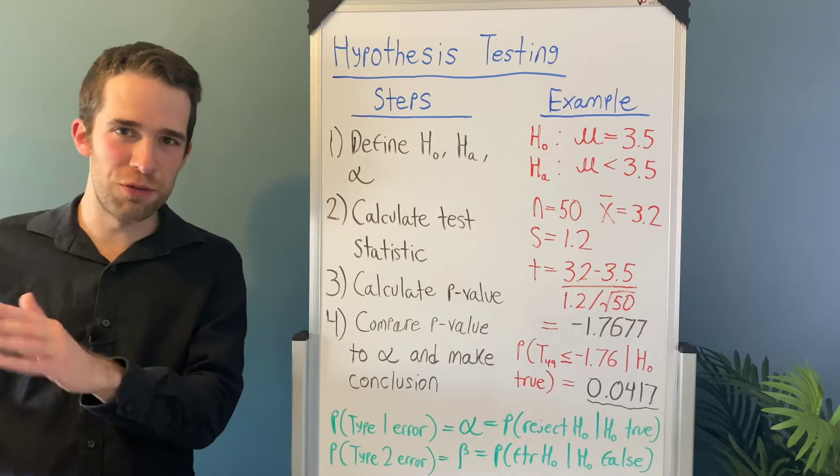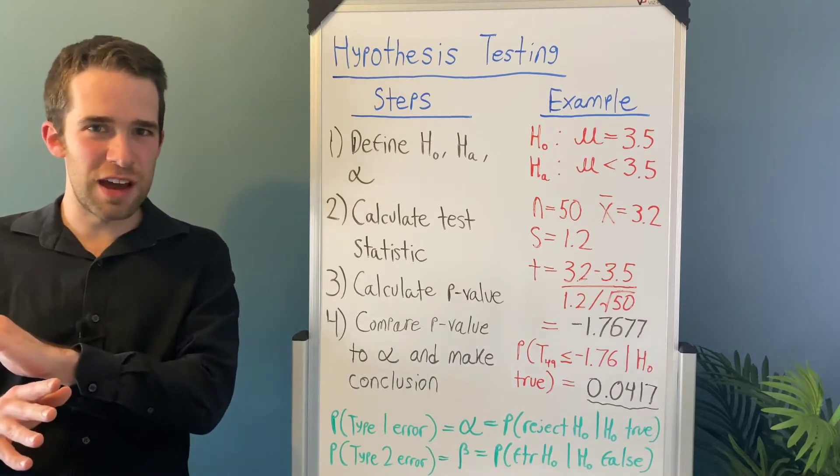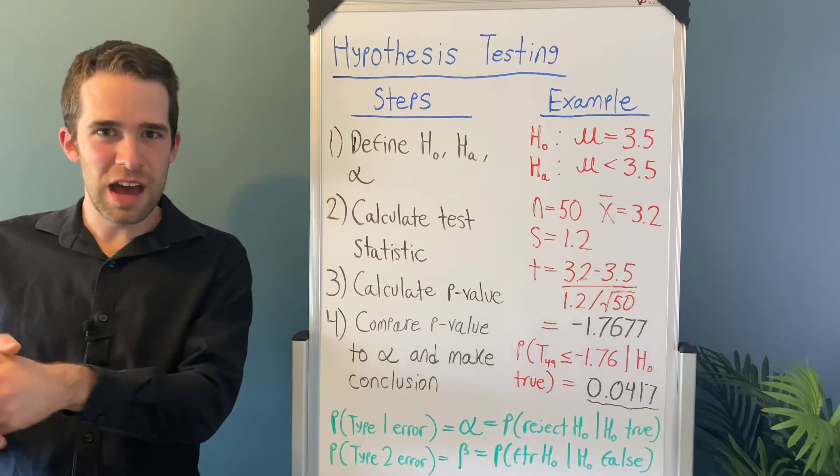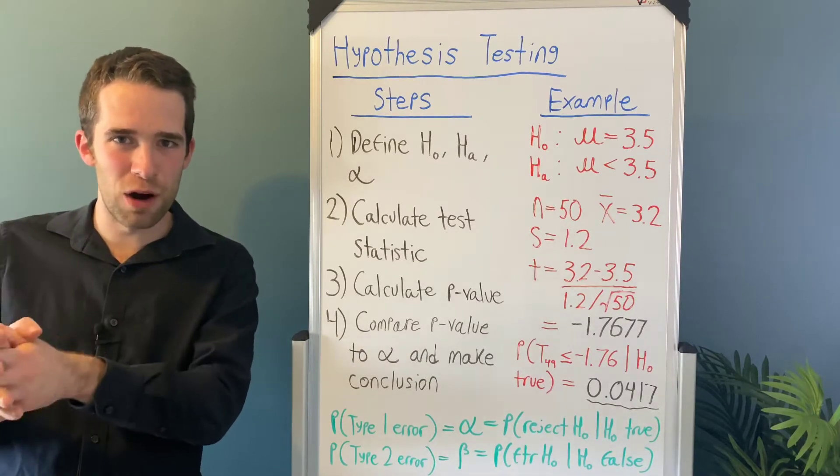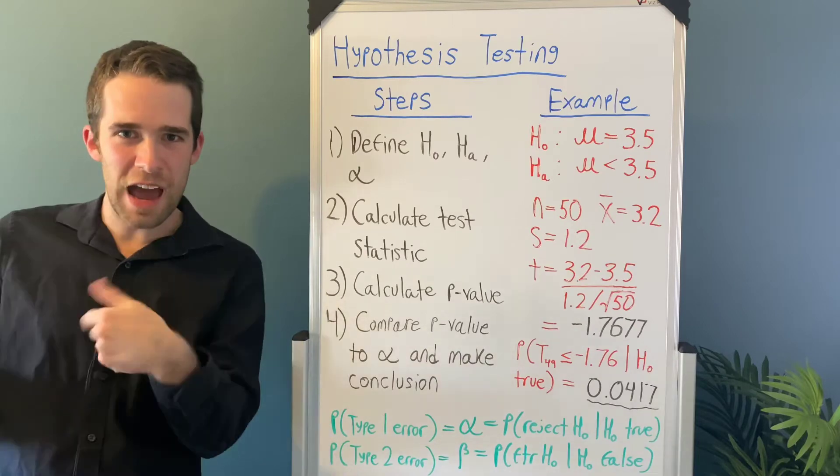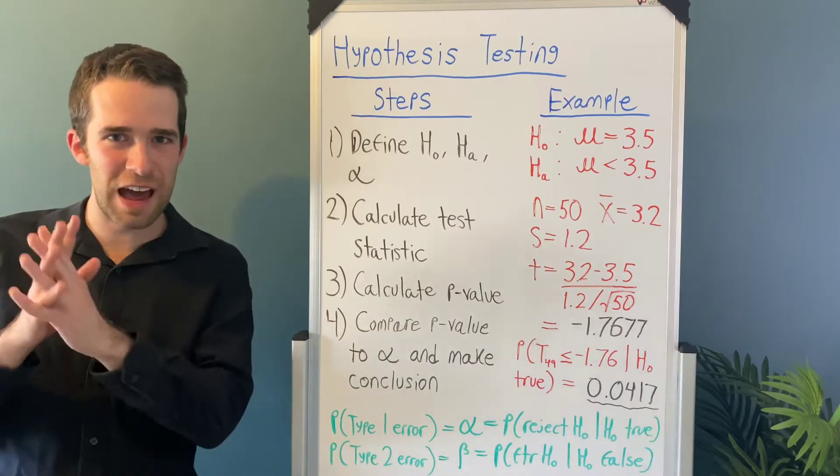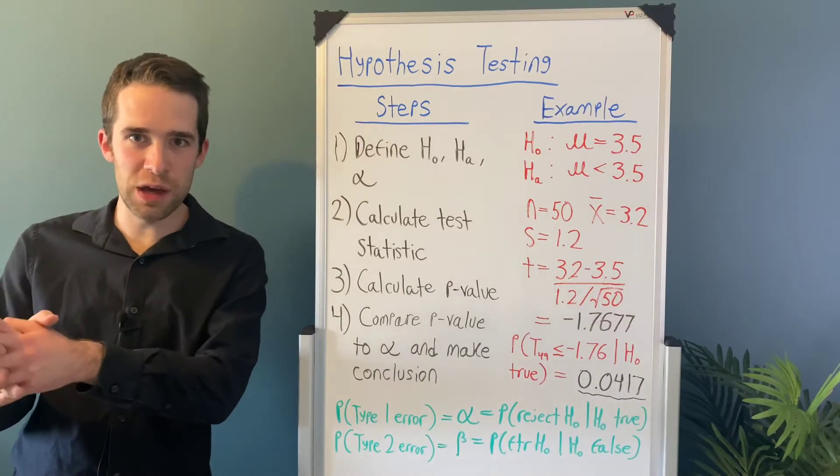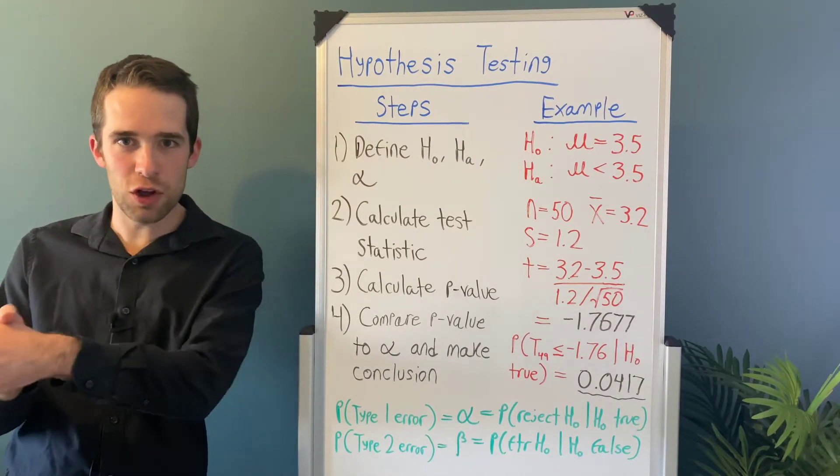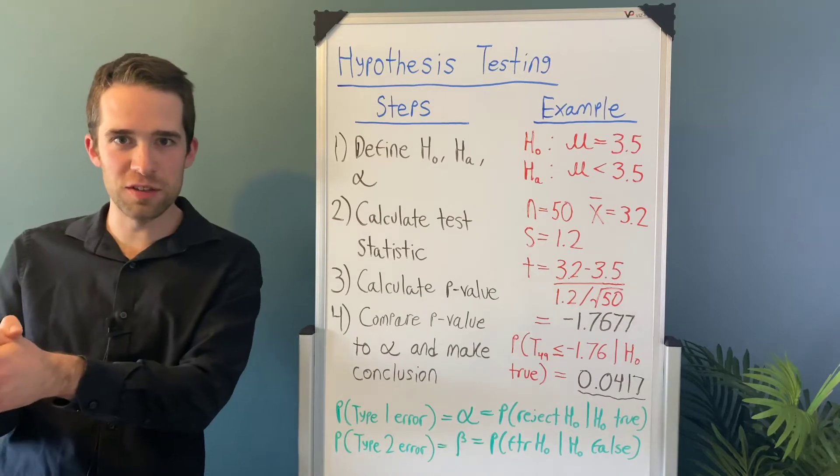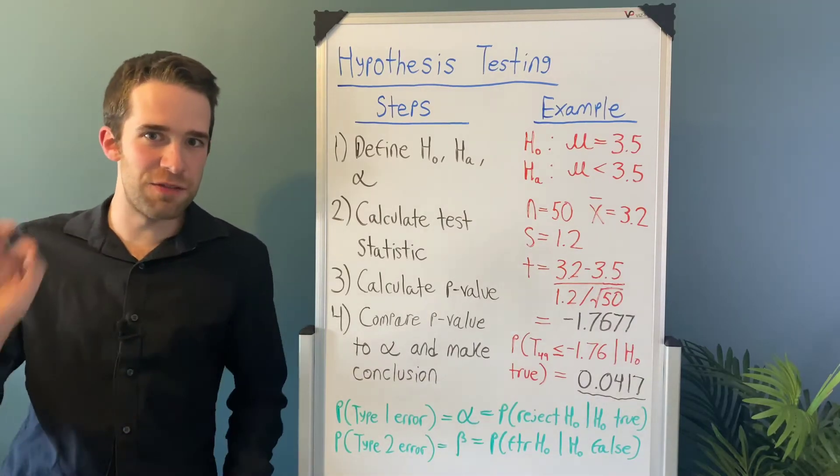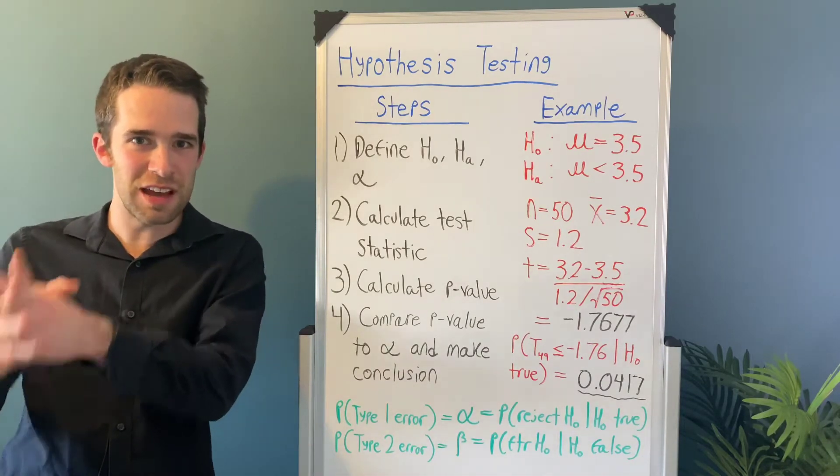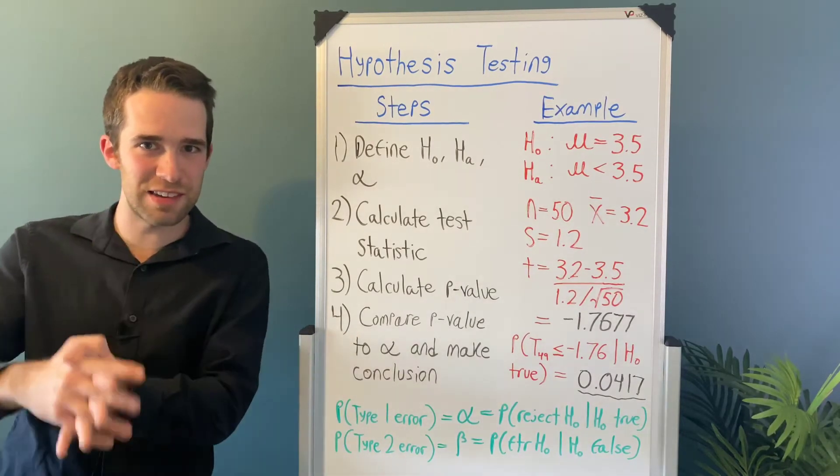So you want to conduct the statistical test to demonstrate that in fact Americans use their phones for less than three and a half hours a day. So you create a sample of 50 Americans - let's just say it's a perfectly random and representative sample in this case. And you come back with a sample mean x̄ of 3.2 hours and a sample standard deviation s of 1.2 hours. And then immediately, your question should be statistically: can we conclude that the average time Americans spend on their phones on a daily basis is in fact less than 3.5 hours?